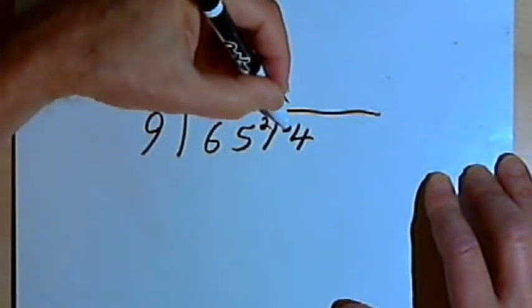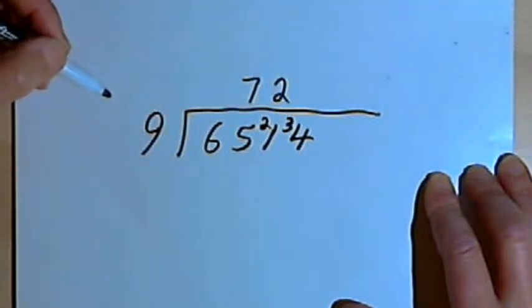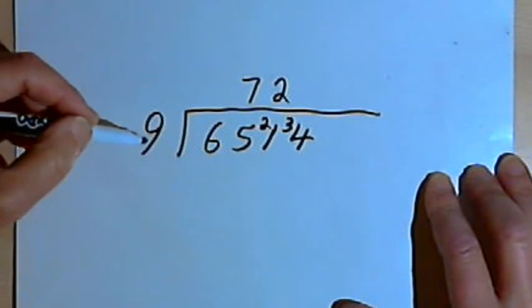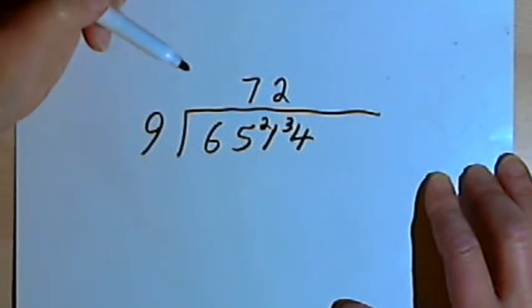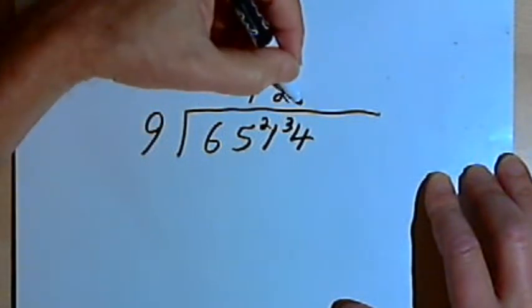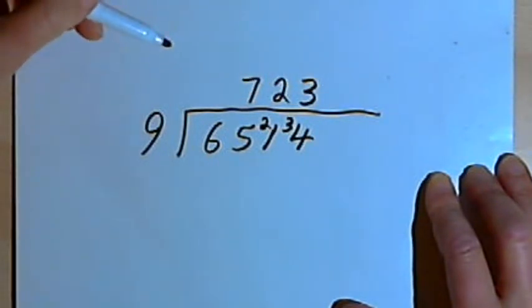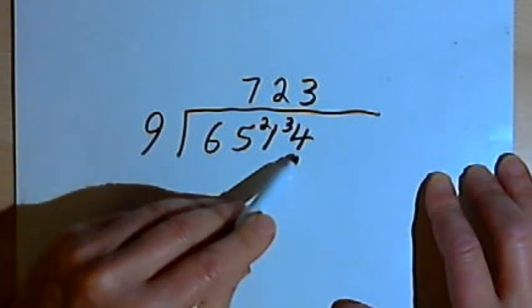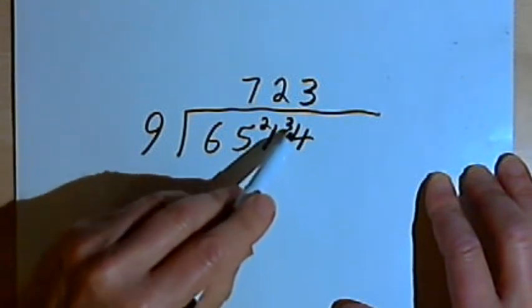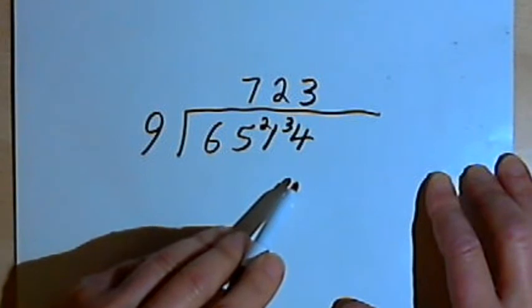So I'm going to put the 3 in front of the next digit. And I'm going to have to divide 9 into 34. 9 into 34 is going to go 3 times. And 3 times 9 is 27. And then I want to subtract the 27 from the 34. So 27 subtracted from 34 leaves me with 7.